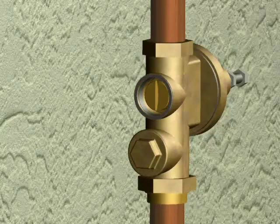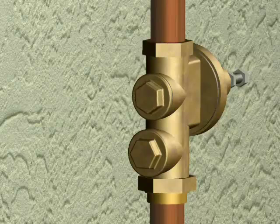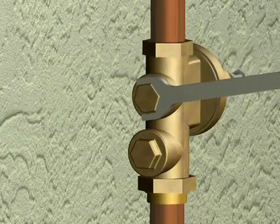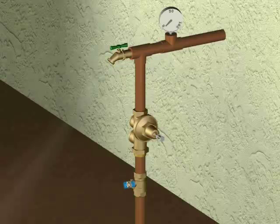Install new cap gasket before threading main cap back onto the body. Tighten clockwise with a wrench. Slowly turn on your water supply.